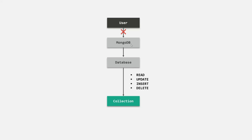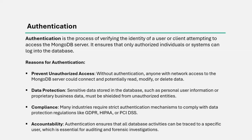Now, what do we mean by authentication and authorization? Authentication is the process of verifying the identity of a user or client attempting to access the MongoDB server. It ensures that only authorized individuals or systems can log into the database. When we have authentication in place, it prevents unauthorized access. Without authentication, anyone with network access to the MongoDB server could connect and potentially read, modify, or delete data. Authentication also provides data protection — sensitive data such as personal user information or proprietary business data must be shielded from unauthorized entities. Many industries also require strict authentication mechanisms to comply with data protection regulations.